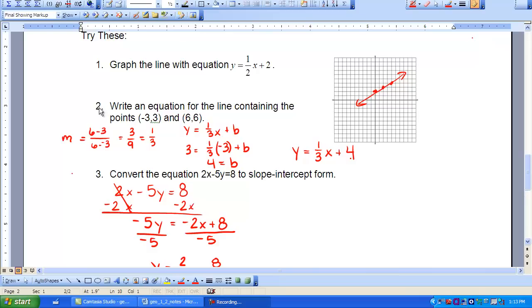For number 2, I needed to write an equation for the line containing the points (-3,3) and (6,6), which means I need to find a slope and I need to find a Y intercept. So if I calculate my slope by finding my difference between my Y, 6 minus 3, and 6 minus a negative 3, that gives me then 3 over 9, which simplifies to 1 third.